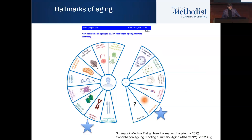A great review from the Copenhagen conference in 2022 revised the hallmarks of aging, updating the original paper by Lopez-Otin published in Cell. We're going to be focusing on inflammation and telomere attrition. I'm going to make the point that telomere attrition might be one of the master regulators of aging, because many features of aging are reversible with the reversal of telomere attrition, including inflammation.